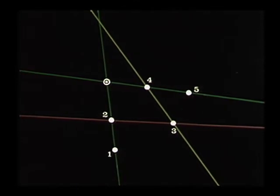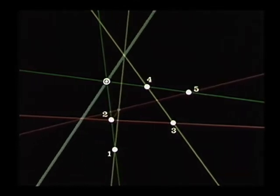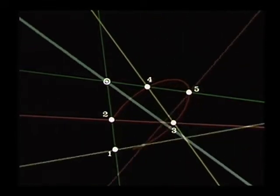Notice that nowhere in this construction did we resort to metric notions. As we promised earlier, the construction is carried out by straight edges alone. It's a linear construction, a projective construction. I want to say that again. Notice that nowhere in the construction did we resort to any metric notions. The construction was carried out entirely by straight edge. This is an example of a projective construction. It's really the first example in history that we know of.